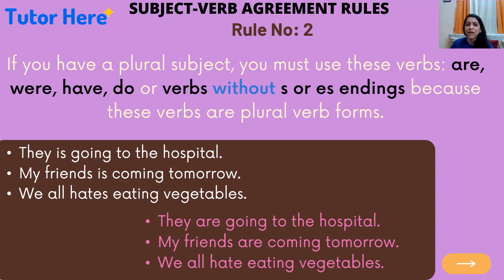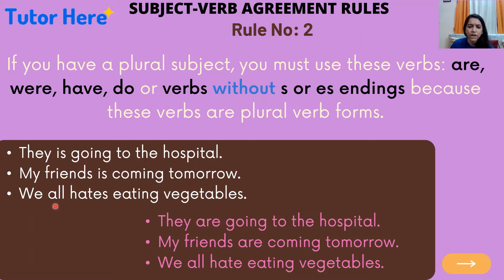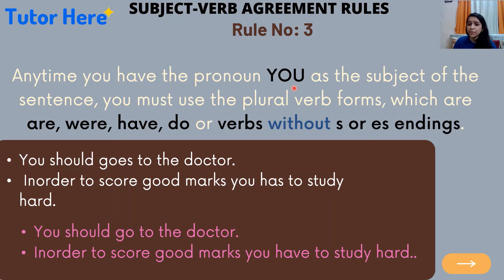Rule number two: if you have a plural subject, the verbs you will use are 'are,' 'were,' 'have,' 'do,' or verbs without 's' or 'es' endings, because these verbs are in plural form. For example, 'They is going to the hospital,' 'My friends is coming tomorrow,' and 'We all hates eating vegetables' are grammatically incorrect, because the subjects they, my friends, and we all refer to many people — a plural subject — but the verbs are in singular form. The correct answers are: 'They are going to the hospital,' 'My friends are coming tomorrow,' and 'We all hate eating vegetables.'